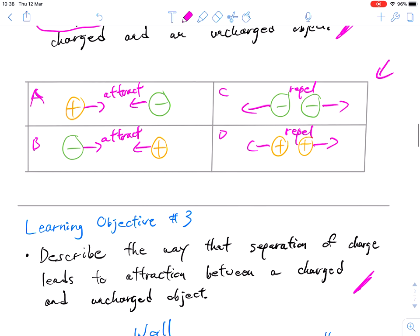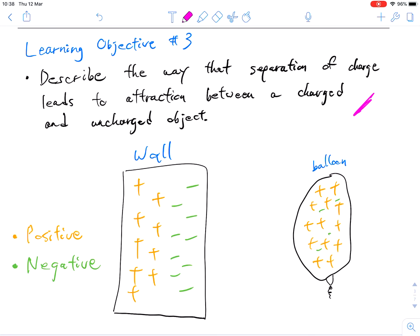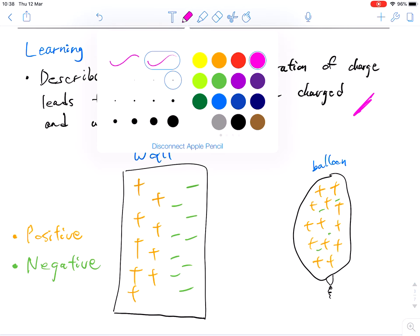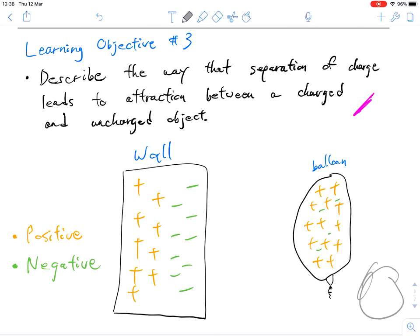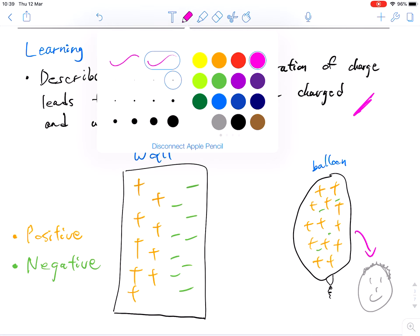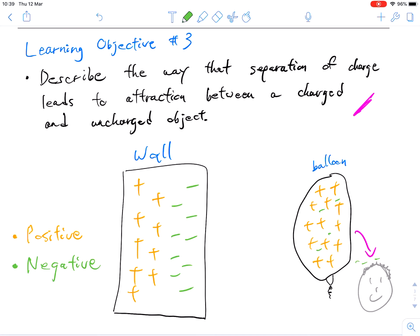This second part is closely related to our third learning objective. Between a charged object and an uncharged object, and the way that the charge separates. Here we have a situation where this might have been one of the examples you've thought about. When you have a person with some hair, and when you rub the balloon on a person's hair, the balloon is going to take on a particular charge. The balloon may take on a positive charge.